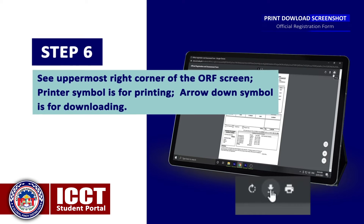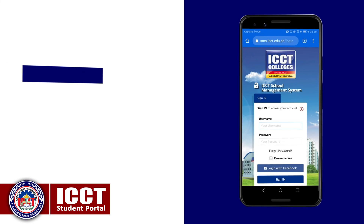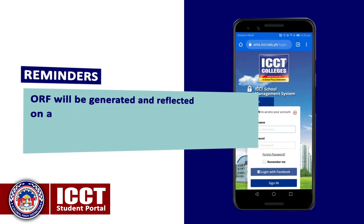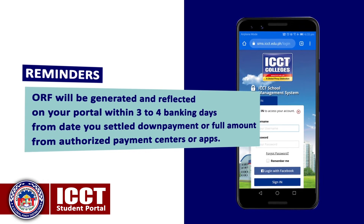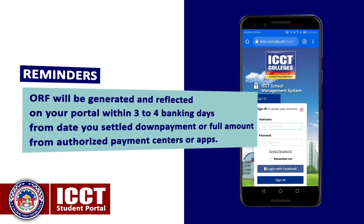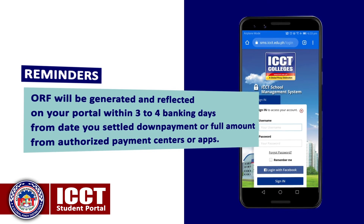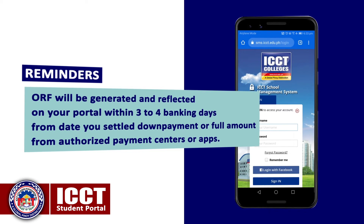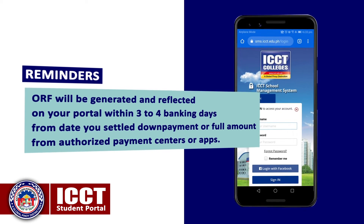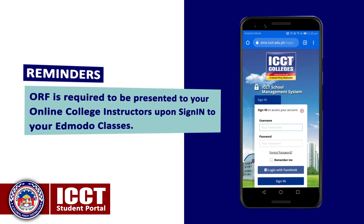See the upper-most right corner of the ORF screen — the printer symbol is for printing, and the arrow-down symbol is for downloading. Reminders: The ORF will be generated and reflected on your portal within three to four banking days from the date you settle your down payment or full amount from authorized payment centers or apps.